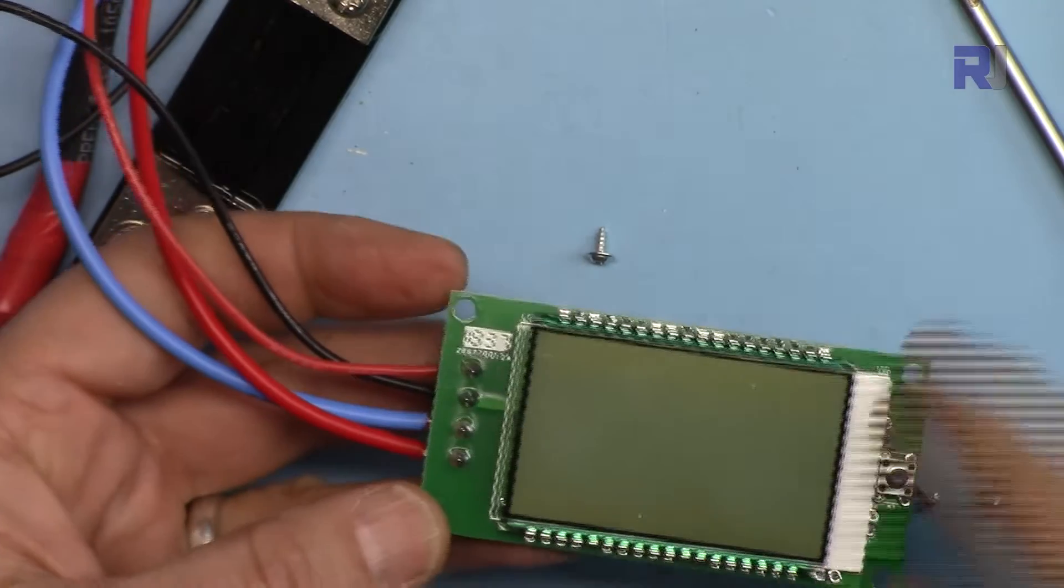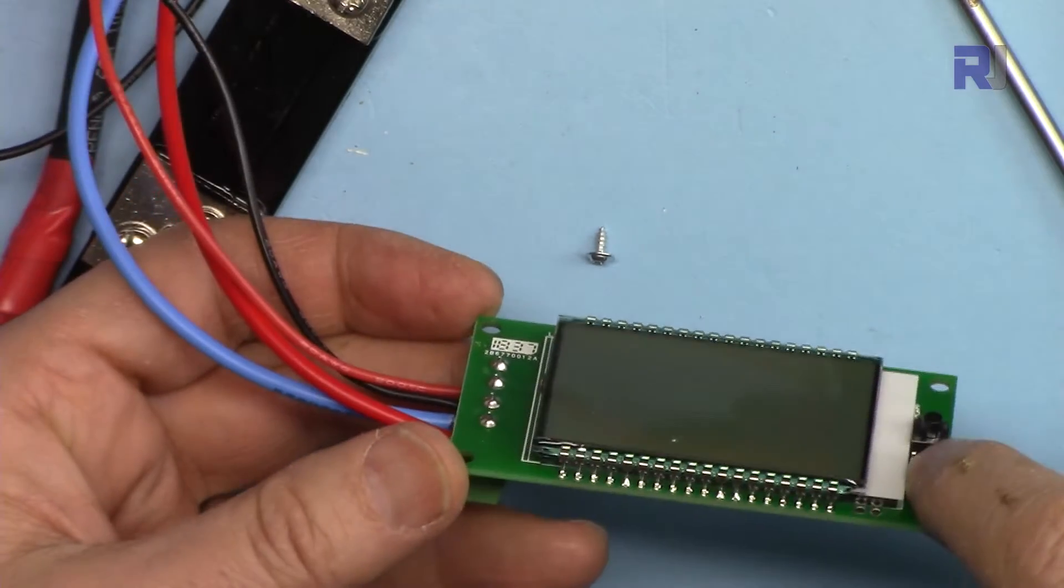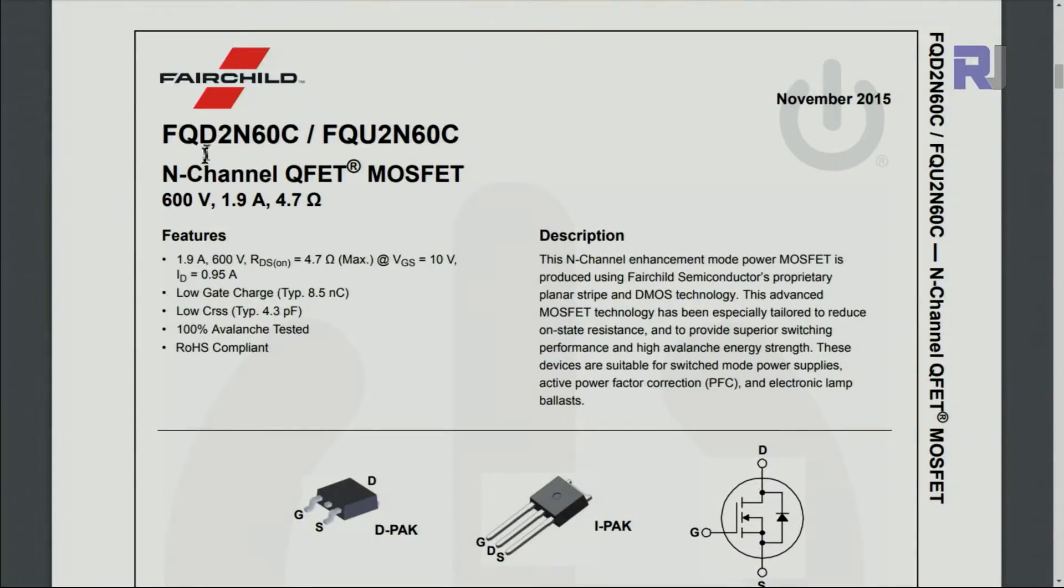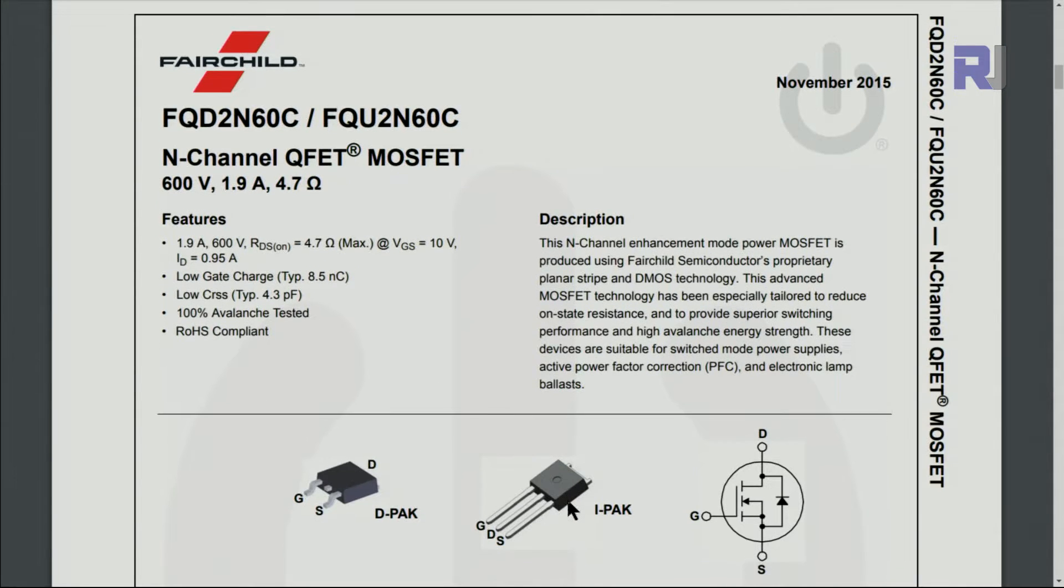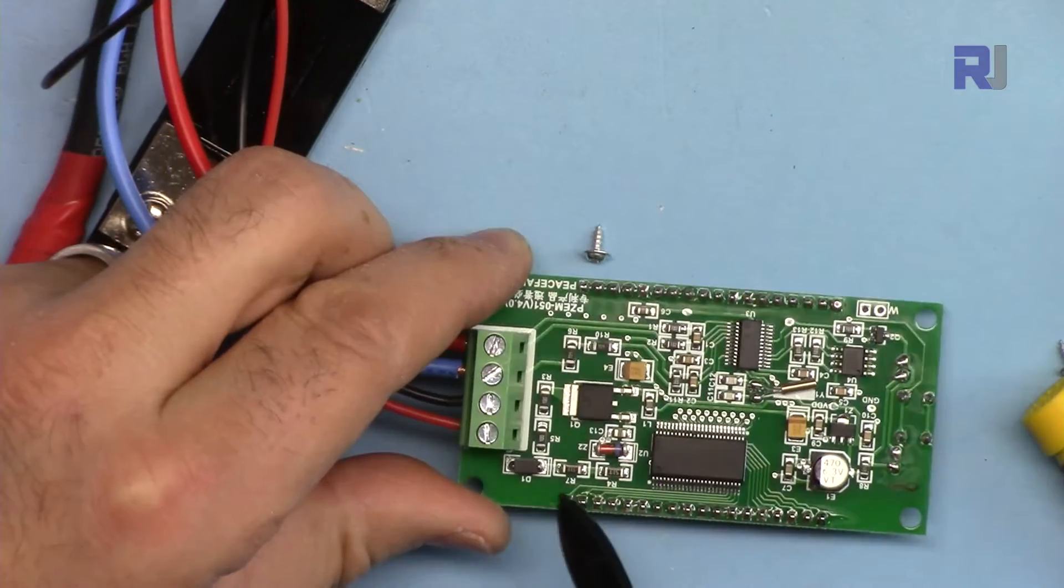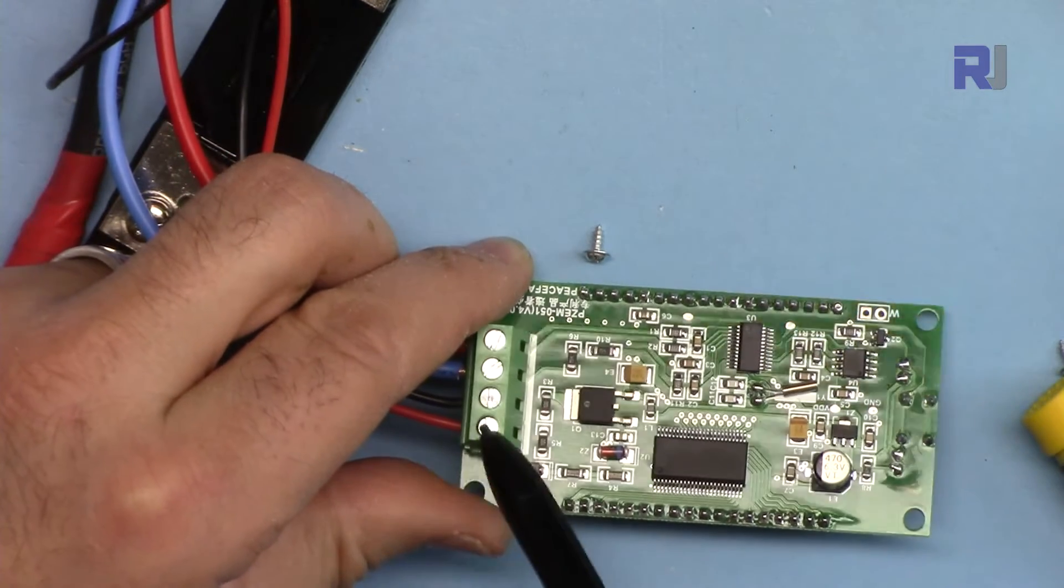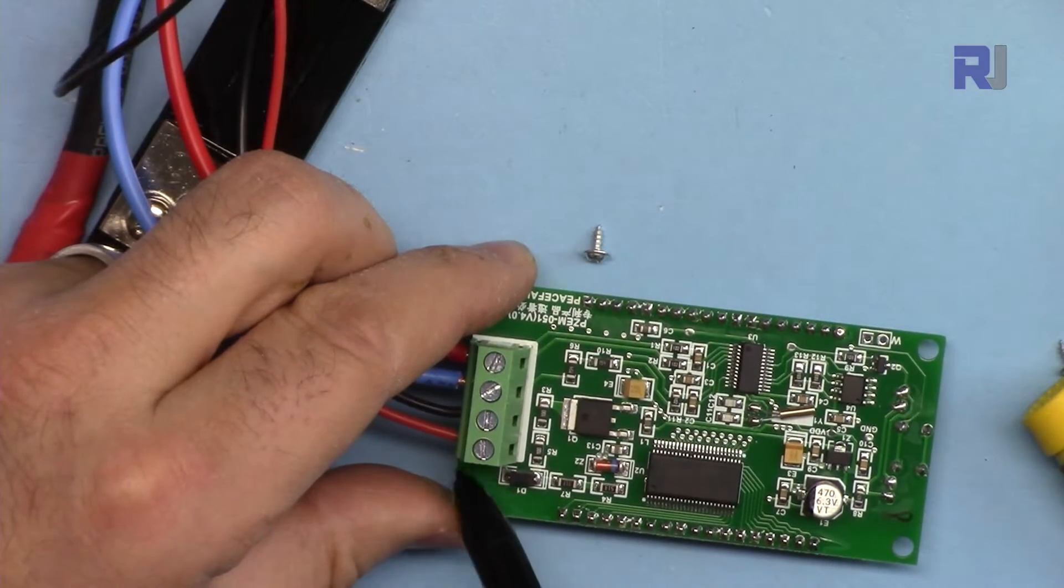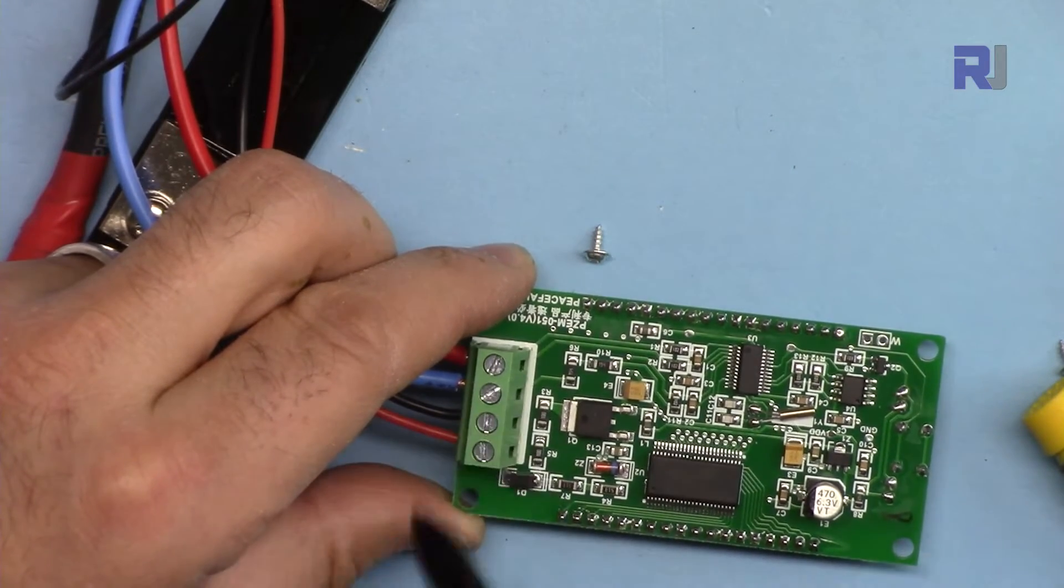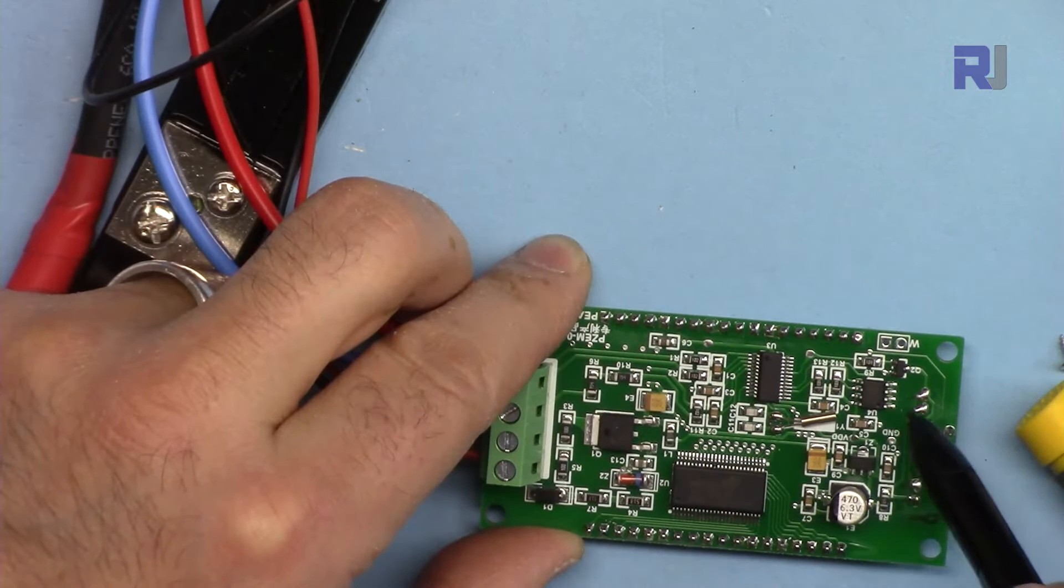On this side accept the display and switch we don't have any other components. This is a 2N60C 600 volts MOSFET. There's also a diode that protects it in case you connect the polarity in reverse. That's very good so you don't have to worry if you connect the negative and positive in reverse.